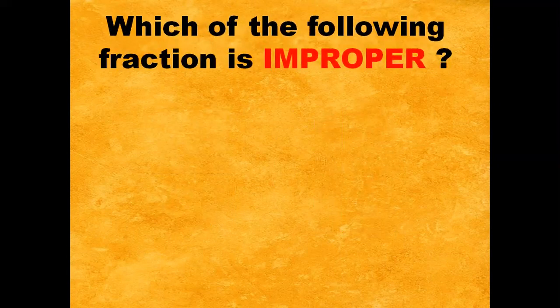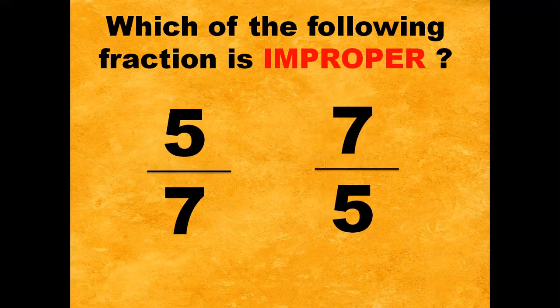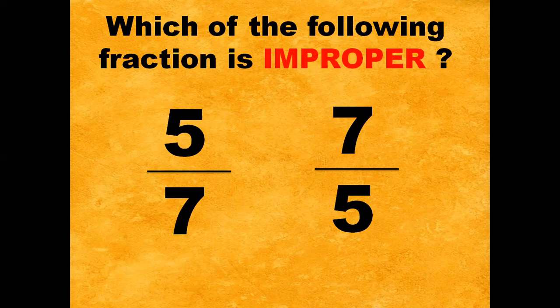Number two. Which of the following fractions is improper? Five-sevenths or seven-fifths? Go! Time is up. The correct answer is seven-fifths. Remember, an improper fraction is a fraction where the numerator is greater than the denominator.